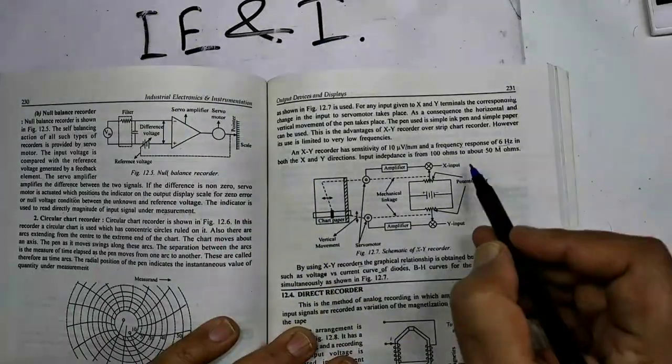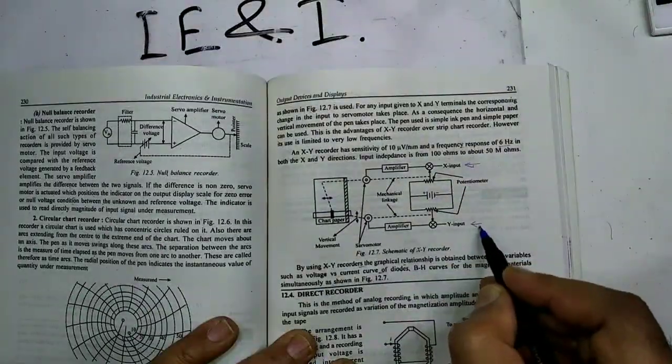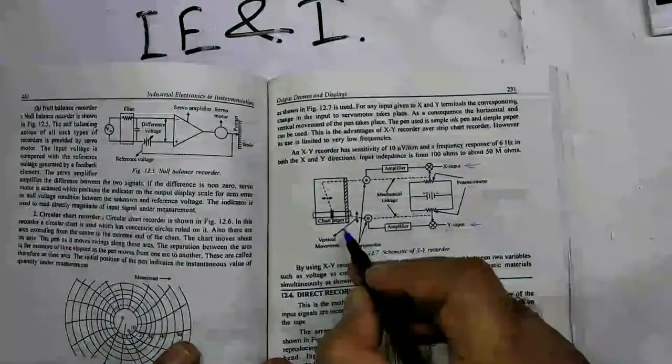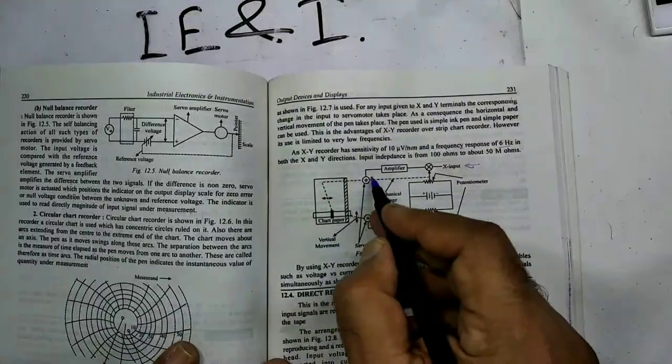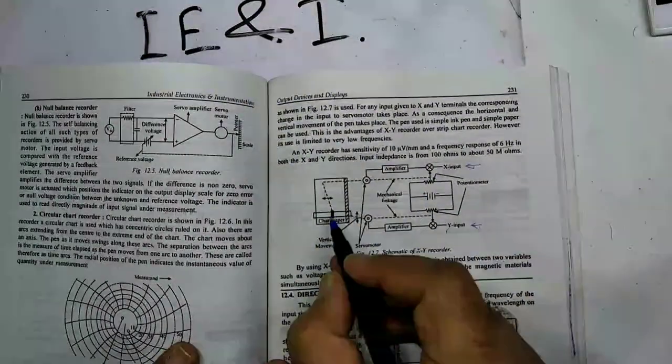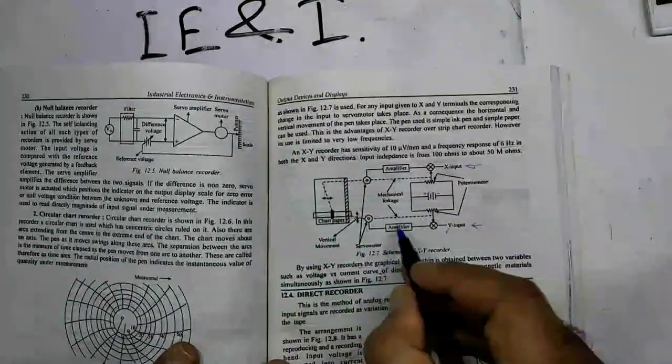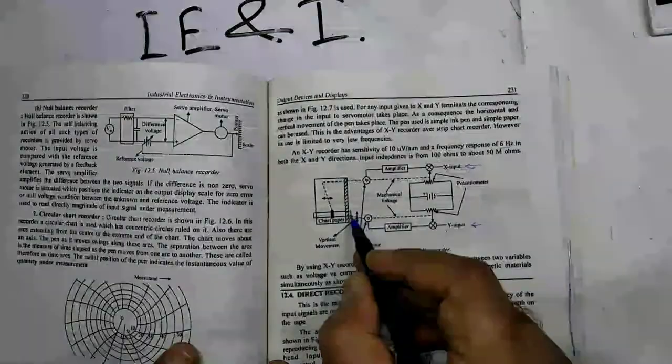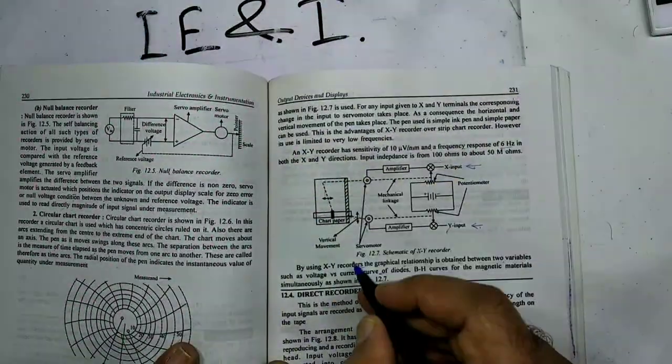Here we can see there are two inputs. One is the X input, the other one is the Y input. X and Y inputs are given to the pen. For X movement, the pen moves in horizontal direction. Whereas for Y input, the paper or chart moves in the vertical direction.